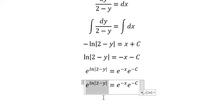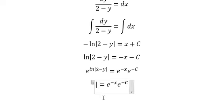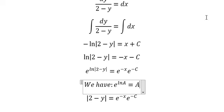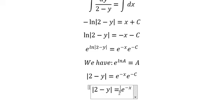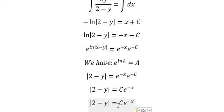So this gives us the absolute value of 2 minus y. That's the formula here. e to the power of c is still a constant, so we can write it as c. Since c can be positive or negative, we can cancel the absolute value, giving us 2 minus y.